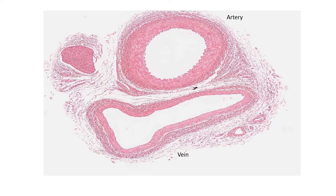The space in the middle, the clear space, has a name. By now, hopefully you have identified it as the lumen. This is what the blood, whether it's oxygenated or deoxygenated, will be passing through.